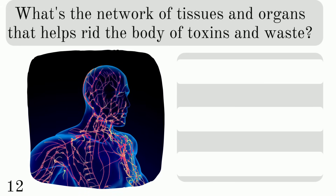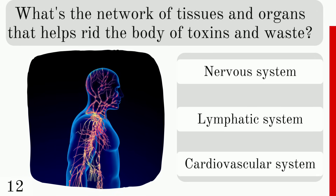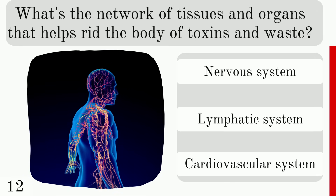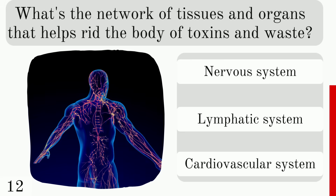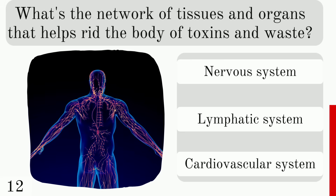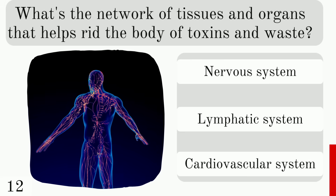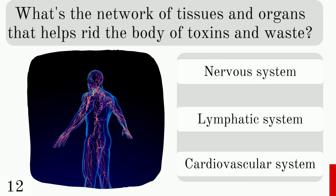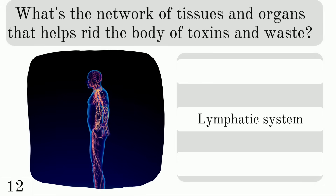What is the network of tissues and organs that helps rid the body of toxins and waste? Is it the nervous system, lymphatic system, or cardiovascular system? And it is the lymphatic system.